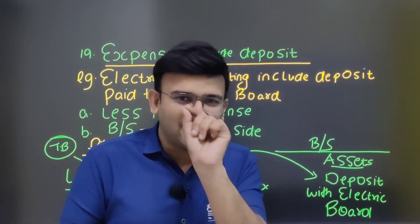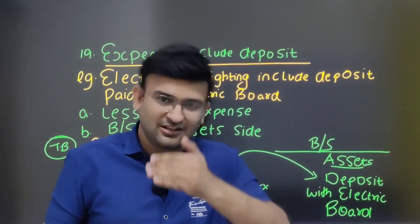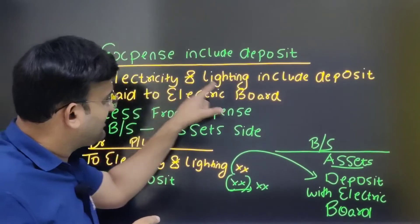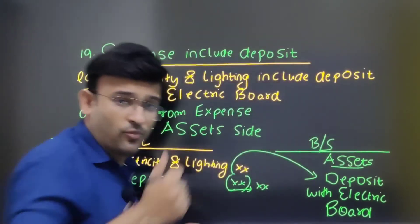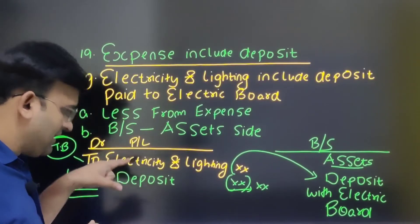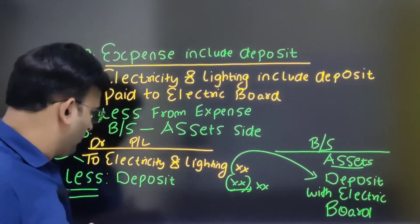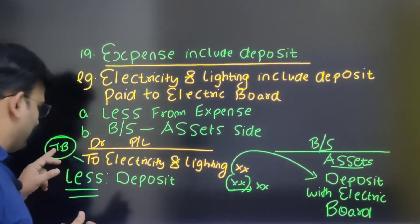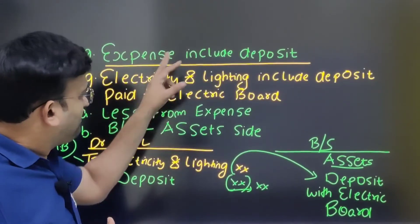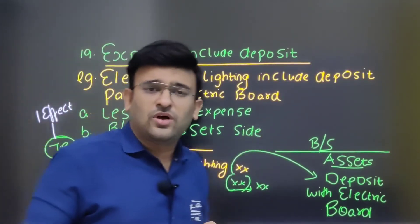We cannot accept that deposit as an expense. For example, 500 rupees paid, 100 is deposit and 400 is actual expense. When you return the deposit you will get a refund. So the adjustment is: less deposit from electricity and lighting in profit and loss debit side, and the other effect goes to balance sheet asset side as deposit with electric board.